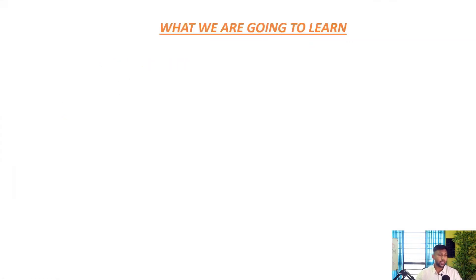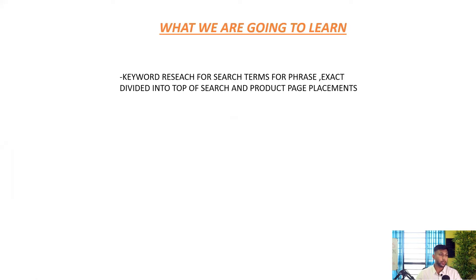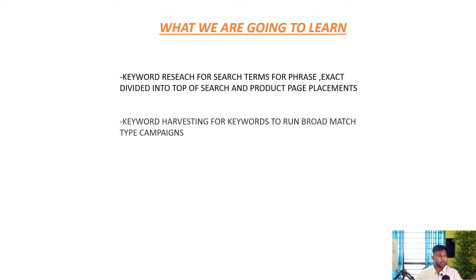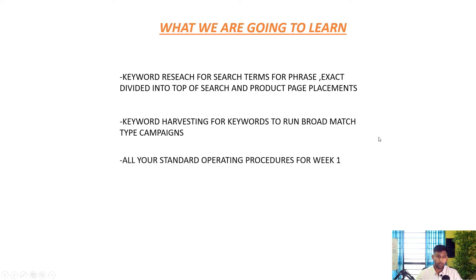In the second level of training, we are going to learn keyword research for search terms for phrase and exact match, divided into top of search and product page placements. Then we are going to do keyword harvesting for running campaigns in broad match type. We are also going to cover all your standard operating procedures for week one that we have left.